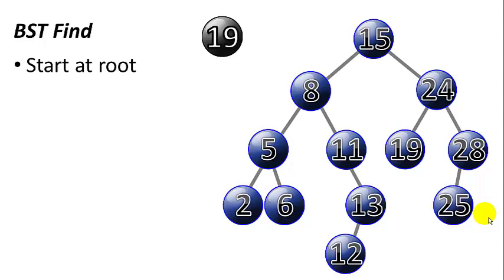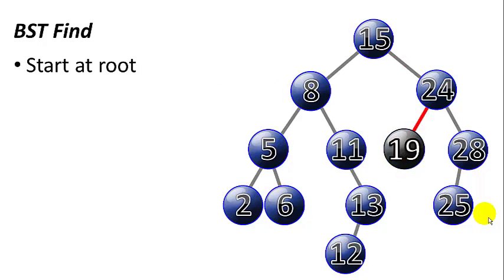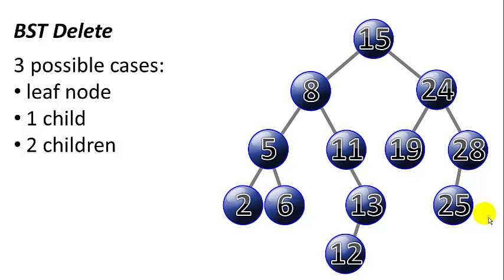For the binary search tree find operation, we also start at the root. Let's say we want to find node 19. Our first comparison is 19 less than 15? No, it is not, so we take the right subtree. Is 19 less than 24? Yes, it is, and there we found 19 already. The find operation is pretty simple.